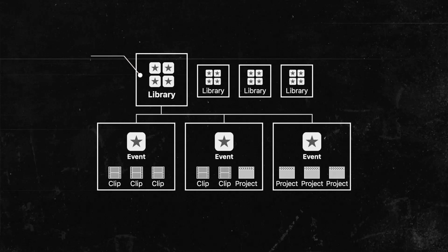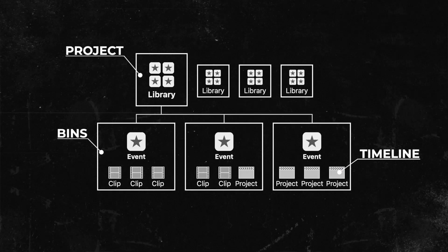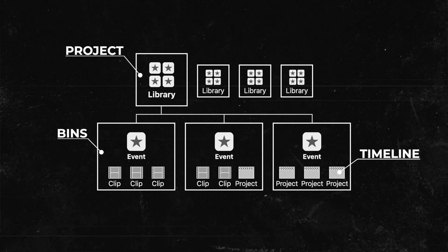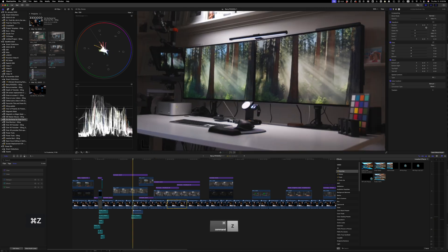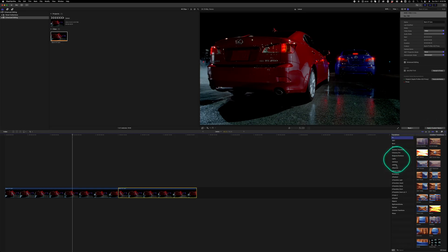Once you understand that libraries are just the full project, events are like bins, and the timeline is just called the project — the project is the timeline, the bins are events, and the full project is stored in a library — it all comes together. It really does come down to muscle memory and being able to find the tools quickly. If a user has used Premiere Pro or DaVinci Resolve for a long time, breaking old habits and building new muscle memory can be frustrating, but very worth it.